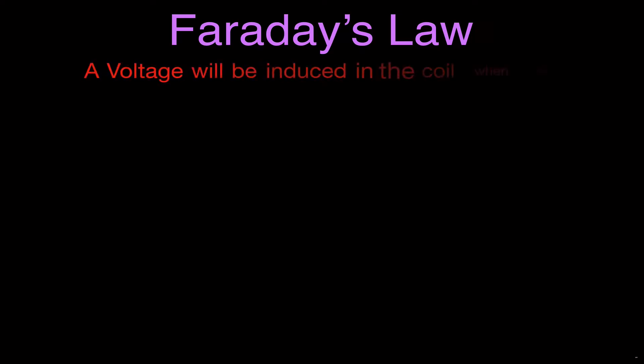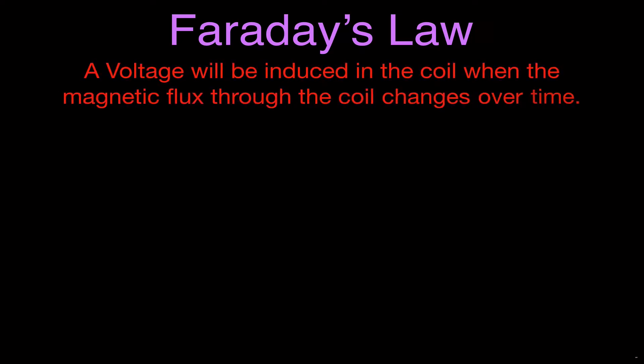Now, this is Faraday's Law. Faraday's Law in words says this: a voltage will be induced in a coil of wire when the magnetic flux through the coil of wire changes over time. So we have to change the magnetic flux, or the magnetic field strength, through that coil of wire over time.